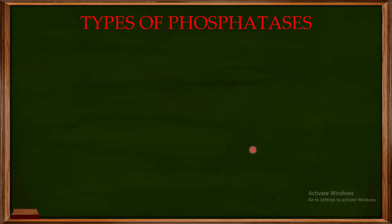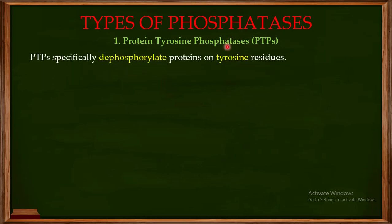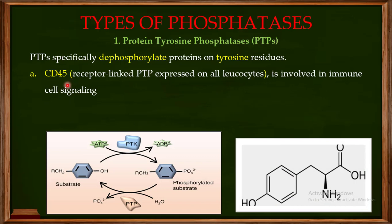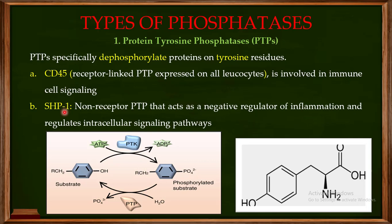There are different types of phosphatases. In the previous video, we discussed one important type — protein tyrosine phosphatases — which dephosphorylate proteins that have been phosphorylated on their tyrosine residues. I gave two examples: CD45, which is involved in immune cell signaling, and SHP1, which acts as a negative regulator of inflammation and regulates a variety of intracellular signaling pathways.